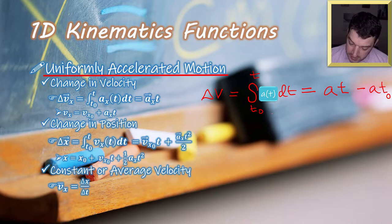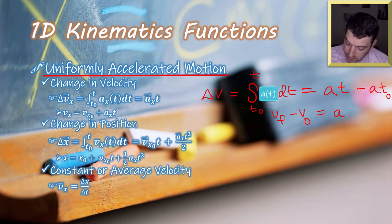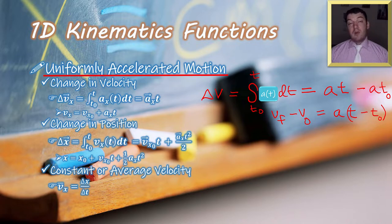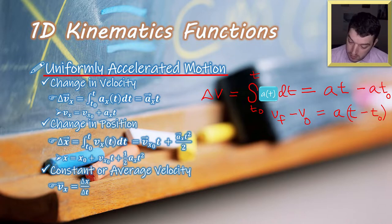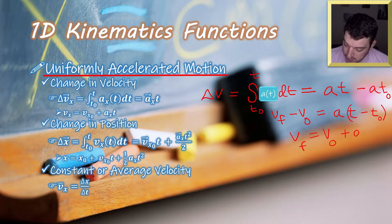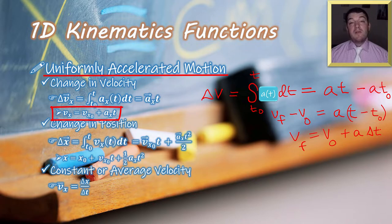Since the change in velocity is your final velocity minus your initial velocity, and that equals acceleration times (t minus t-naught), if your initial time is zero then your final time is also your change in time. More generally, v_final equals v_naught plus acceleration times the change in time. That's our first UAM equation. It relates final velocity, initial velocity, acceleration, and time — if you know three of those four variables, you can solve for the fourth.